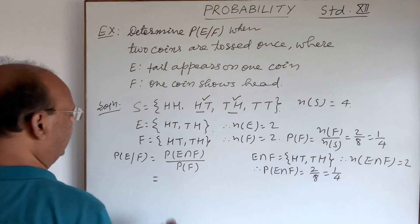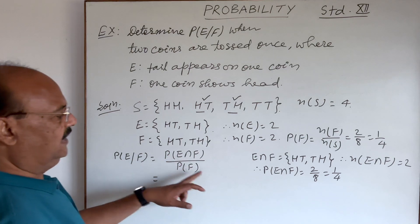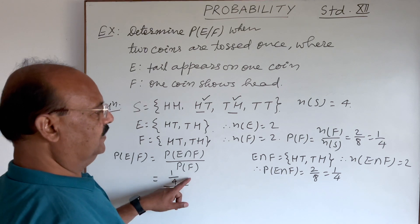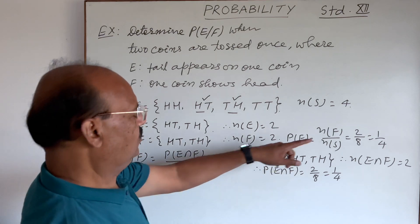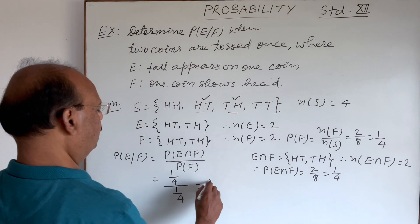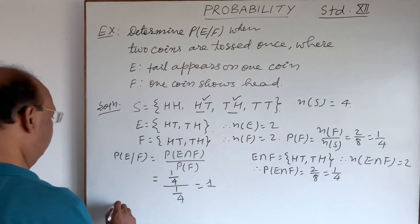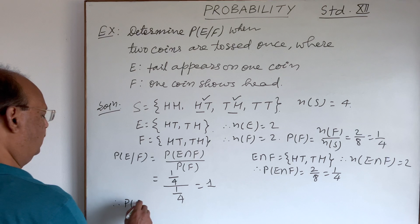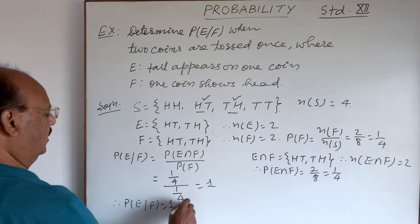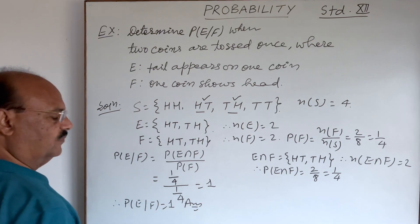So this is equal to 1. This is the value of probability of E conditioned to F. This is the answer.